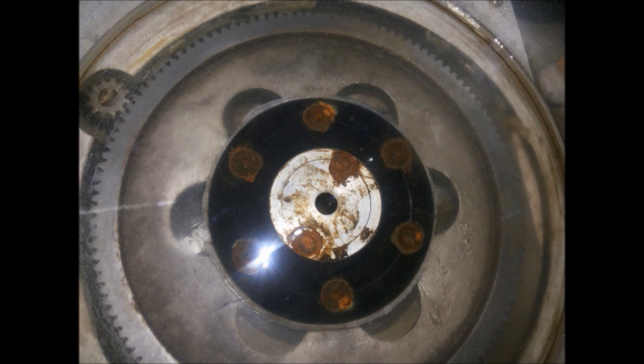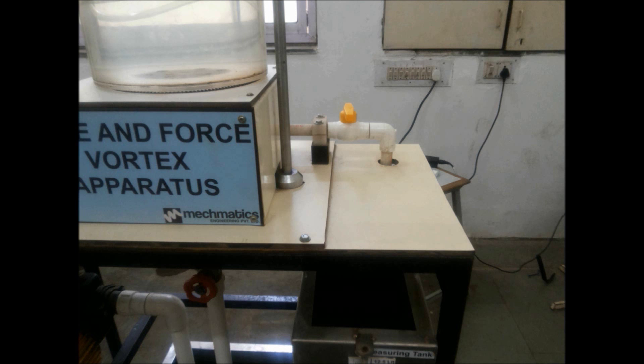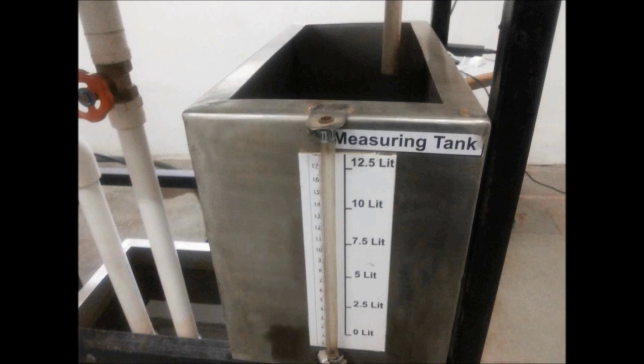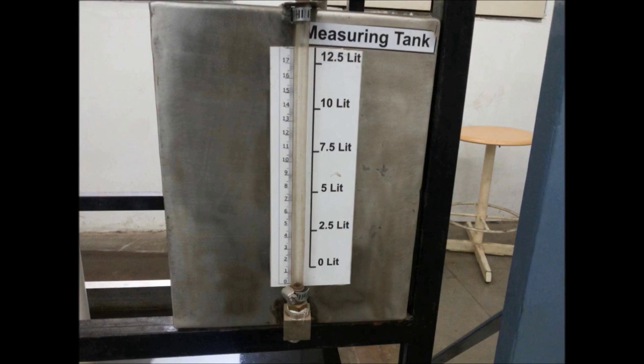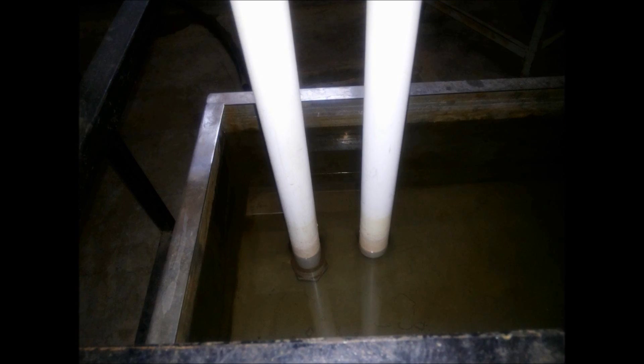Now the water from this cylinder discharges into the measuring tank through the pipe, where we can measure the flow rate for a specific volume at a specific time. And lastly, water finally reaches to the sump tank through a pipeline.